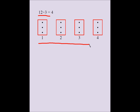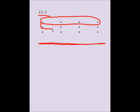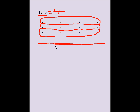This meaning of division is called the measurement interpretation of division. There is another one called partitive — partitive would mean if I take 12 and divide it into three groups, how many items would be in each group? The answer is 4. Same answer, but two interpretations. We are going to use the measurement interpretation of division here in this problem.